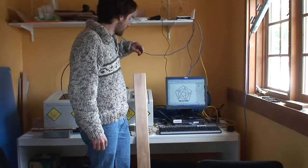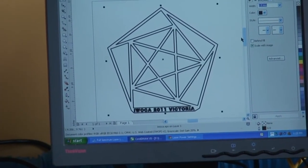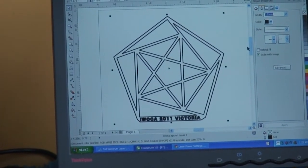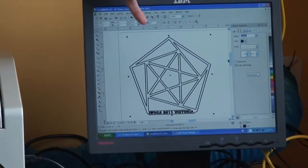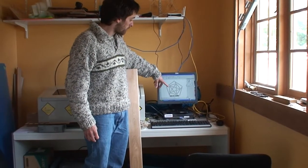Over here on the computer I've got my vector diagram ready for the laser cutter to engrave onto the cedar. And so you can see this is the conference logo that we're going to put on it.